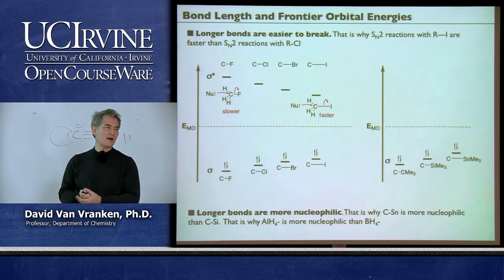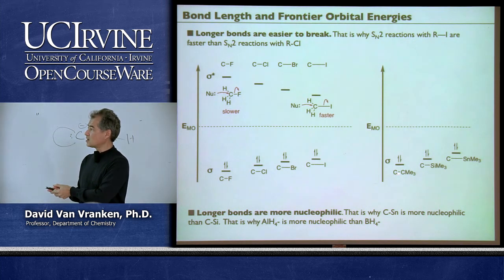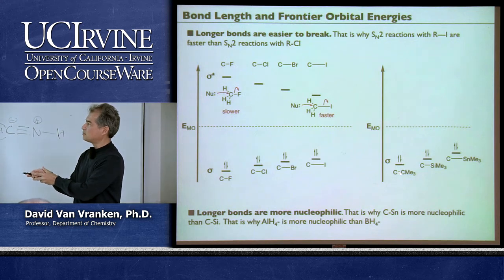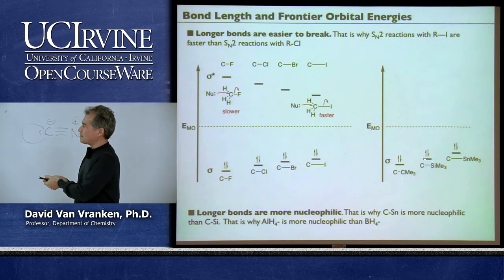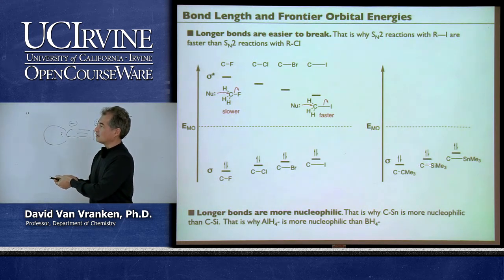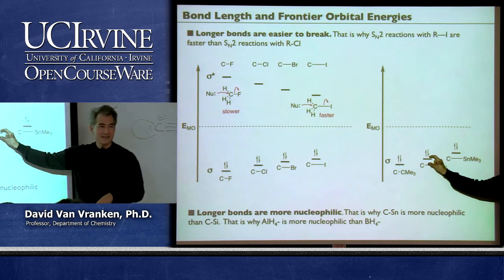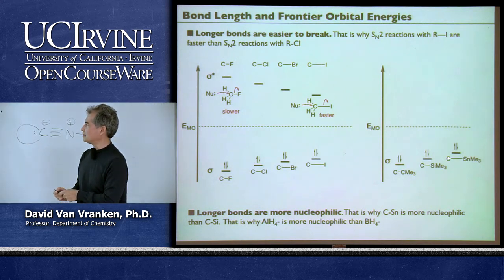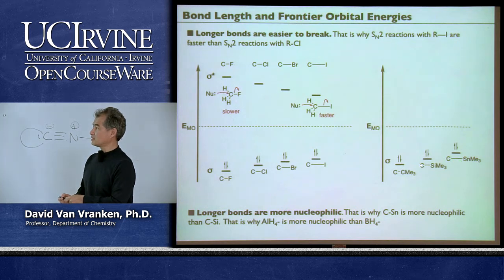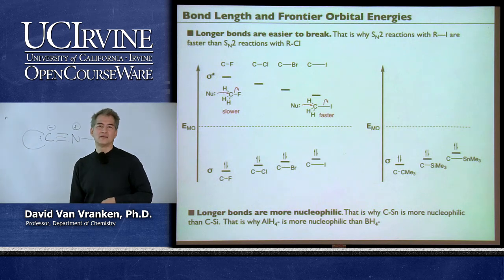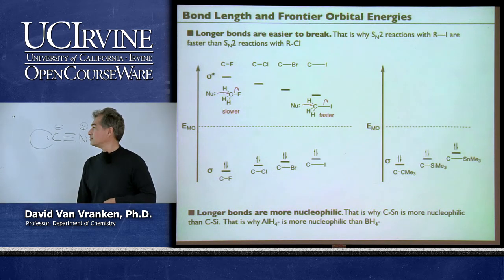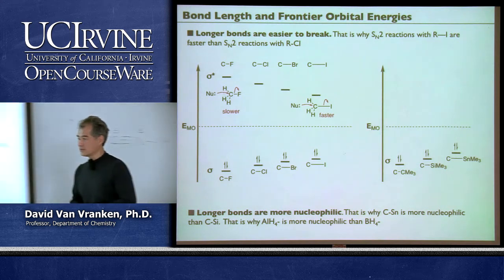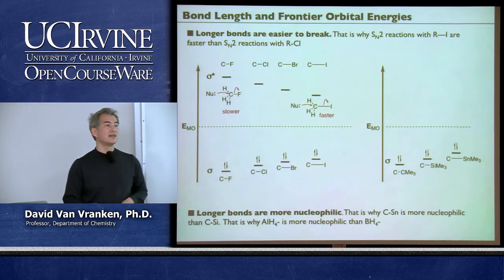The same bond length effect applies going down the carbon group: carbon-silicon is longer than carbon-carbon, so the overlap isn't as effective, the bond is not as strong, and those electrons are more reactive. Carbon-tin is even longer—anything silicon can do, tin can do better. It's more nucleophilic, better at stabilizing beta-carbocations. Carbon-metal bonds to palladium, rhodium, ruthenium—all long bonds, all very nucleophilic. That's why alkyl iodides are so much more reactive than alkyl bromides, which are so much more reactive than alkyl chlorides—it has nothing to do with leaving group ability or stability of the anion.